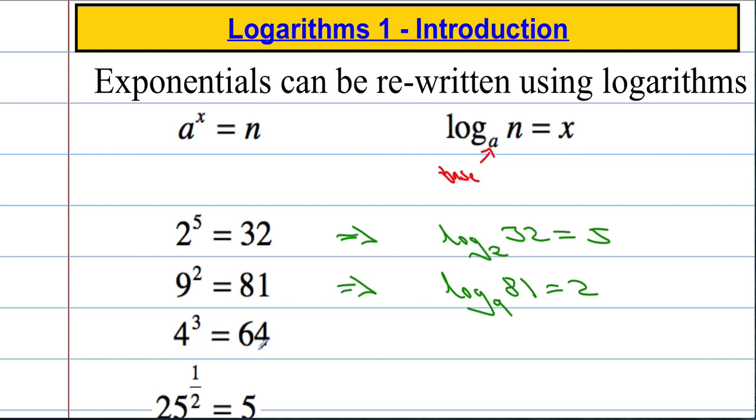Again, we're going to rewrite this now. 4 to the power of 3 equals 64, so we can say that the log to the base 4, so what power of 4 gives an answer of 64? It must be 3.